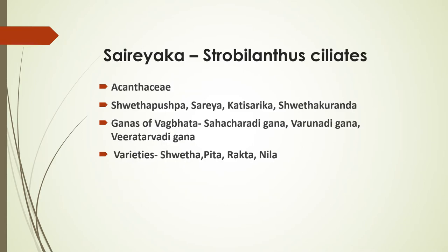Next is Sairayaga or Sahachara. The botanical name is Strobilanthus ciliatus or Neelgirianthus ciliatus. It is abundantly found on Nilgiri mountains in Kerala, hence also called Neelgirianthus ciliatus. The family is Acanthaceae. Synonyms are Shweta pushpa, Saideya, Sareya, Kadisariga, Shweta kurenda, etc. Vagbhata has mentioned it in Sahajaradigana, Varanadigana, and Neeradarwadigana — these are Kabamedohara ganas. Varieties in nighandus are Shweta, Pida, Retta, and Neela, based on the flowers.